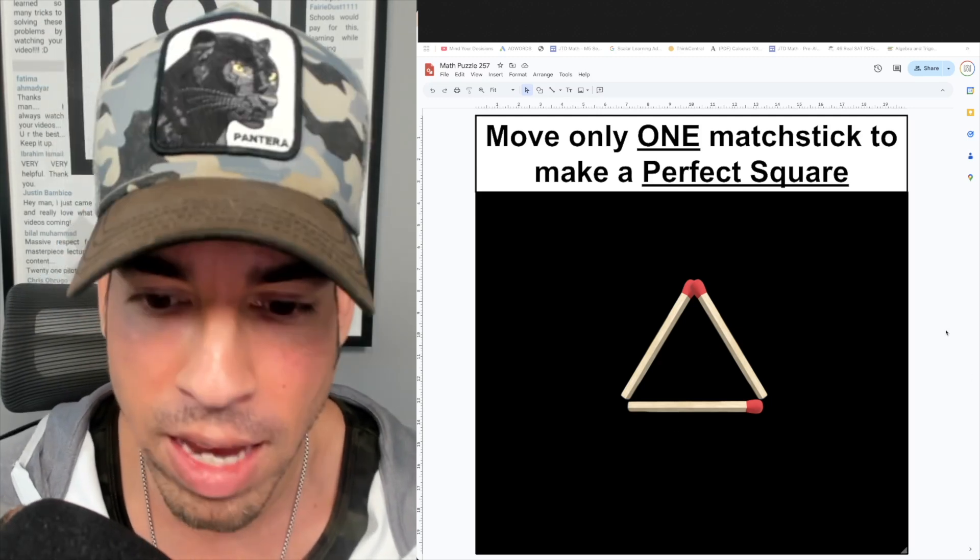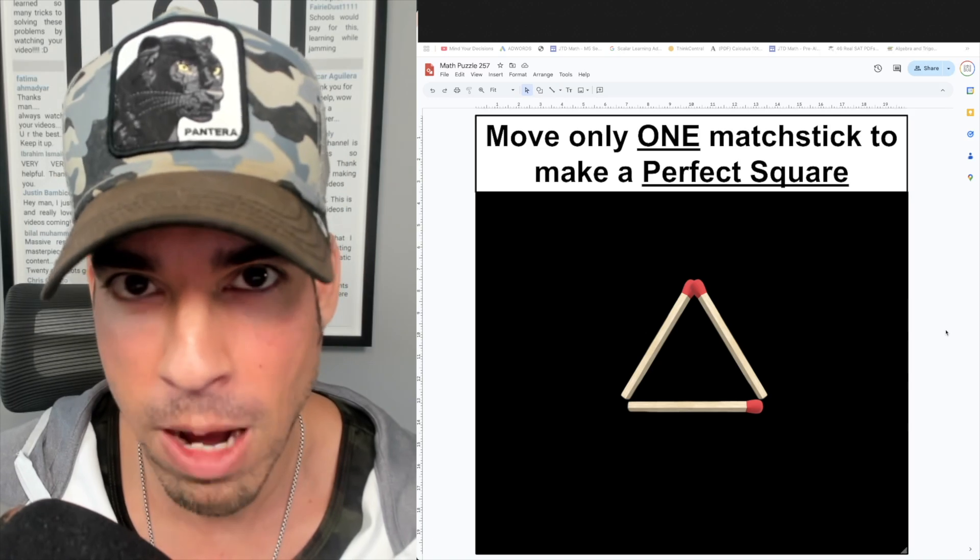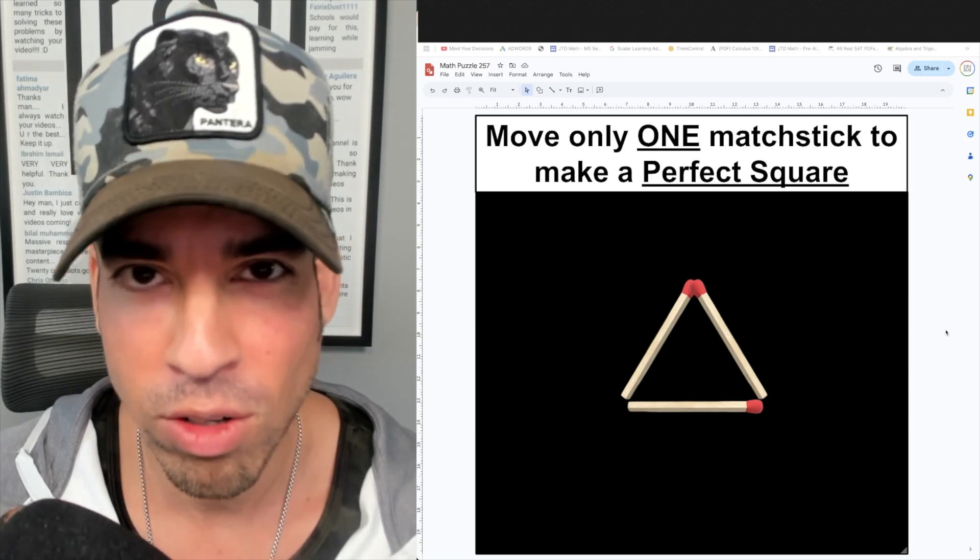You've got to move one to make a perfect square. Hit that pause button and see if you can figure it out. When you're ready, hit play and I'll give you the explanation.